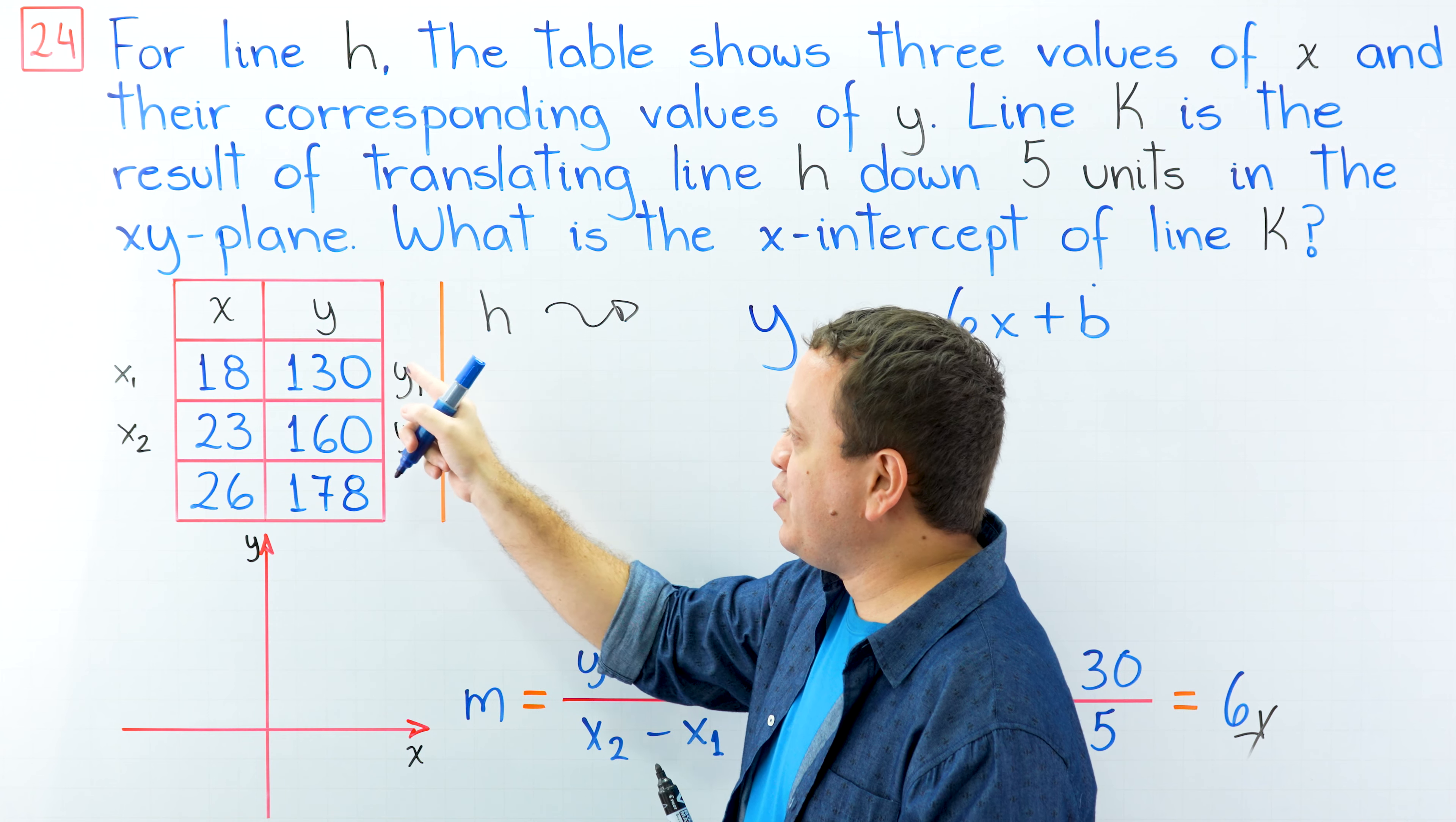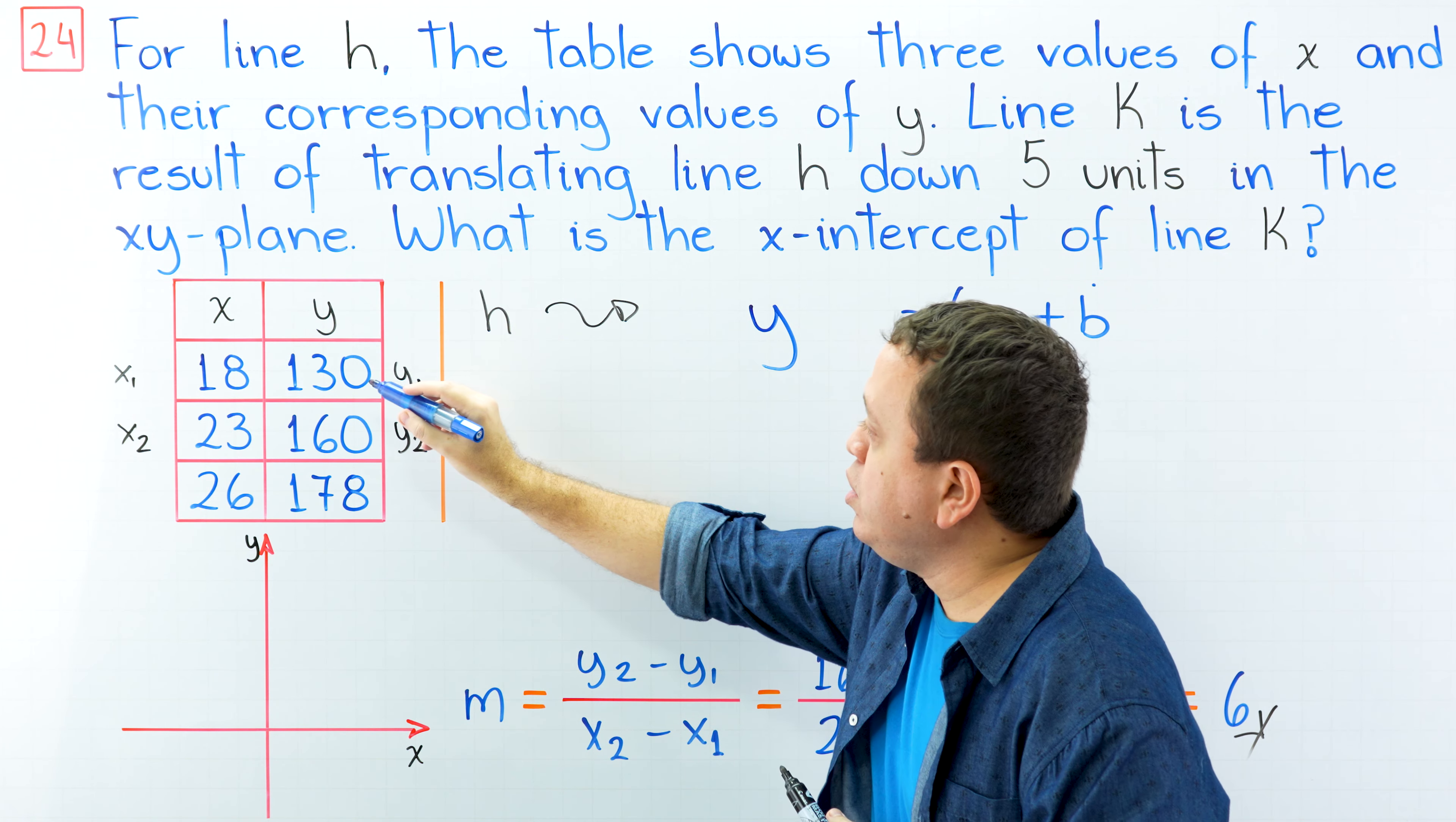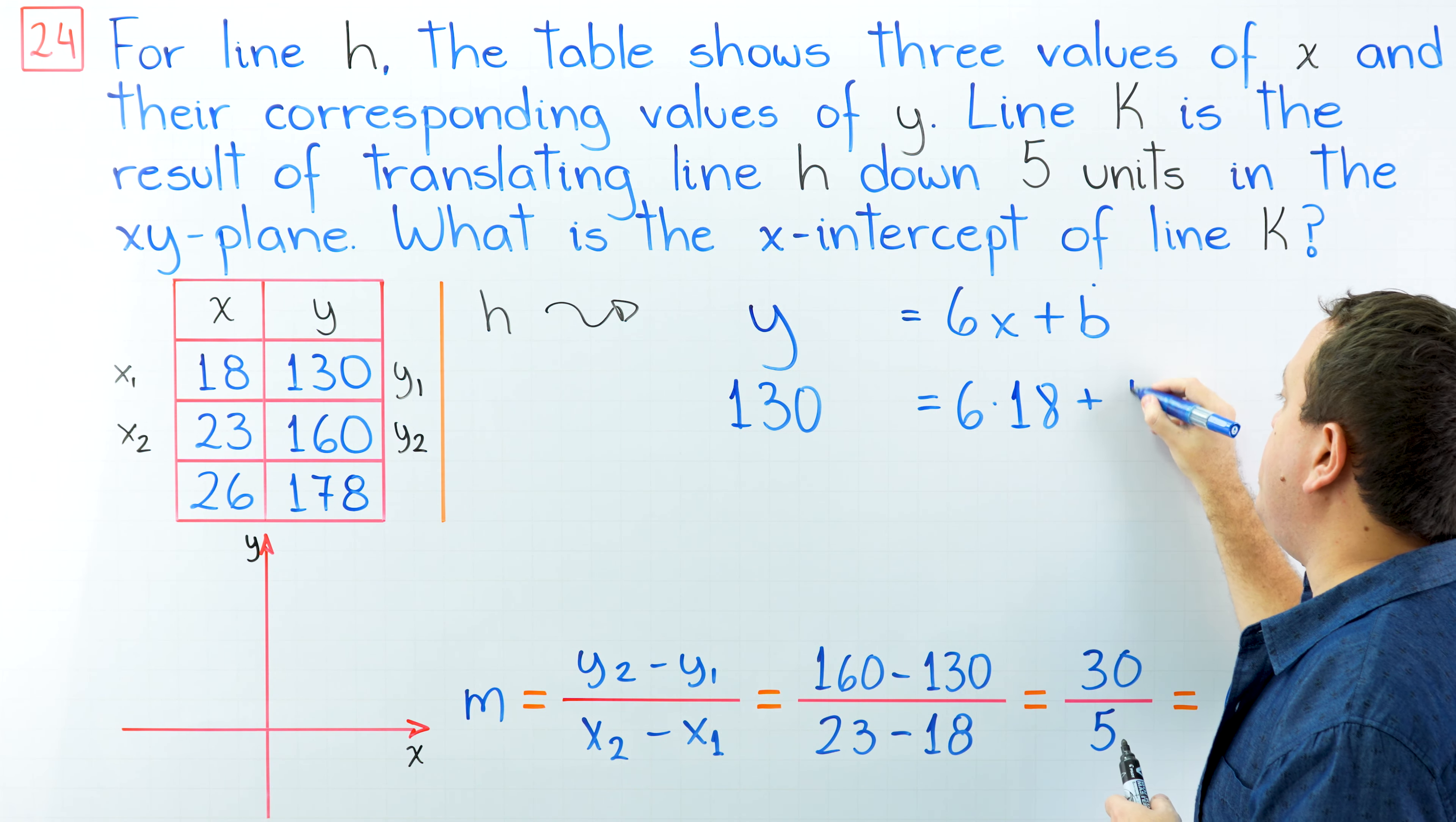We're going to use the first ordered pair because it has the smallest numbers. We just need to replace these two values in here. Instead of y, we're going to use 130. And then this is equal to 6 times x, x is 18, 18 plus b.